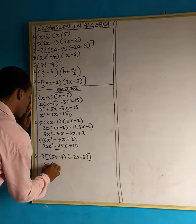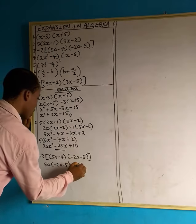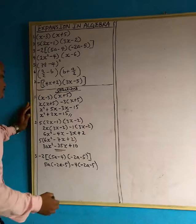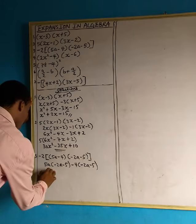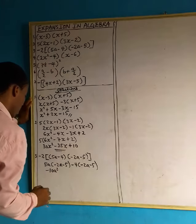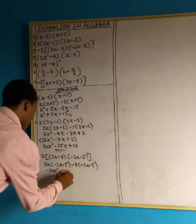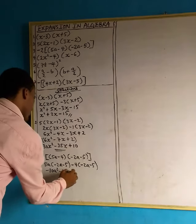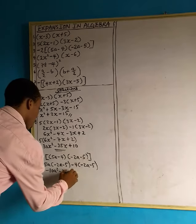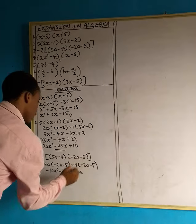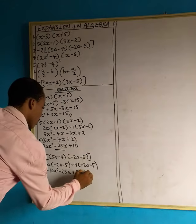So we have 5a multiplied by bracket minus 2a minus 5, then minus 4 multiplied by bracket minus 2a minus 5. 5a multiplied by minus 2a gives us minus 10a squared. Then 5a multiplied by minus 5 gives us minus 25a. Minus 4 multiplied by minus 2a — that comes to positive — so we have positive 8a. Then minus 4 multiplied by minus 5 gives us positive 20.